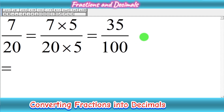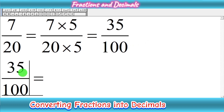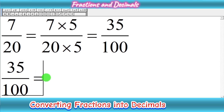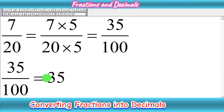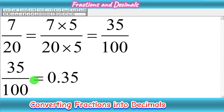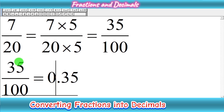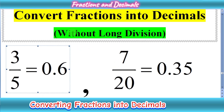Now convert the fraction 35 upon 100 into decimal form. Check the first zero from the right: the first digit is 5, so we write 5. Moving to the second zero, the second digit is 3, so we write 3. Then we see the 1, so we write a decimal point and write 0 before it since there is no more digit. Our answer is 0.35, obtained by making the denominator a power of 10.